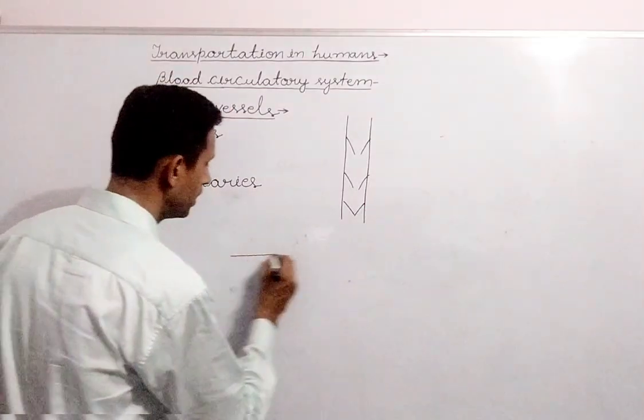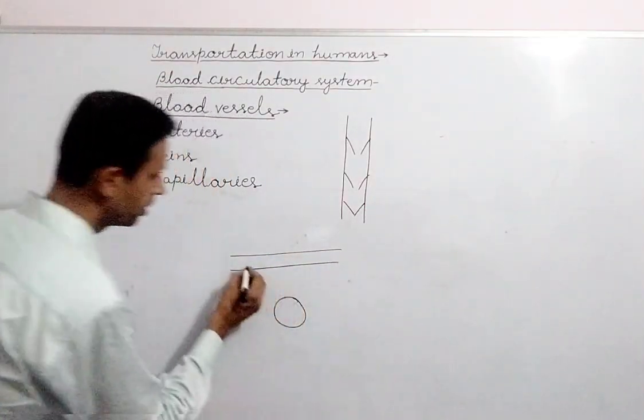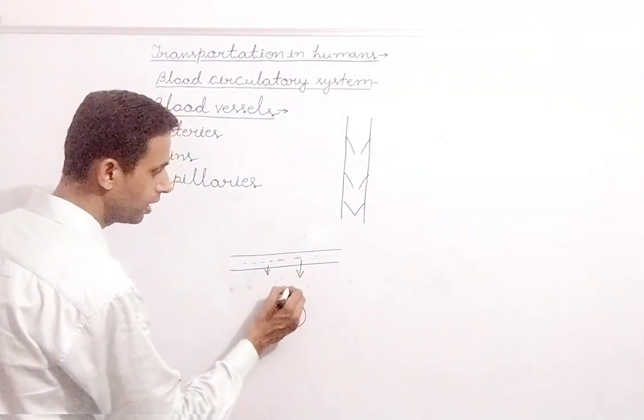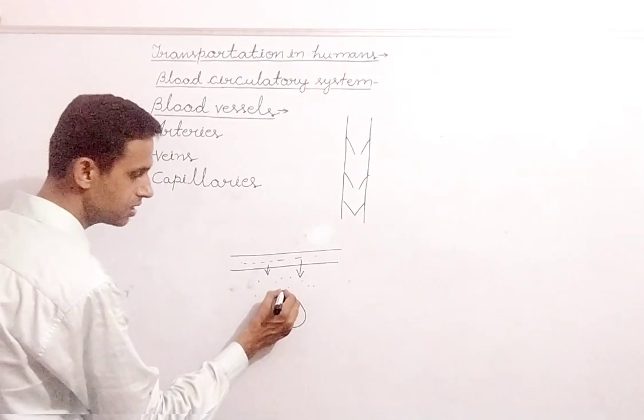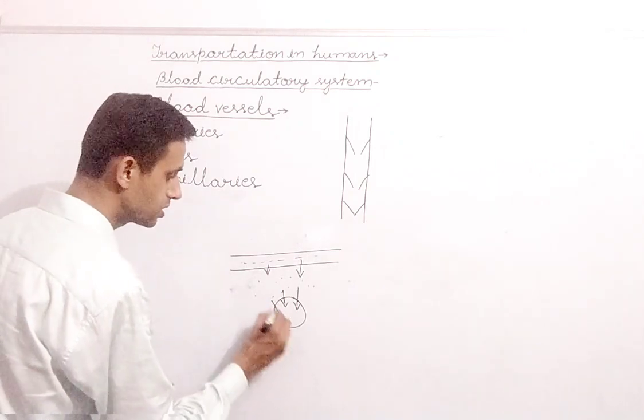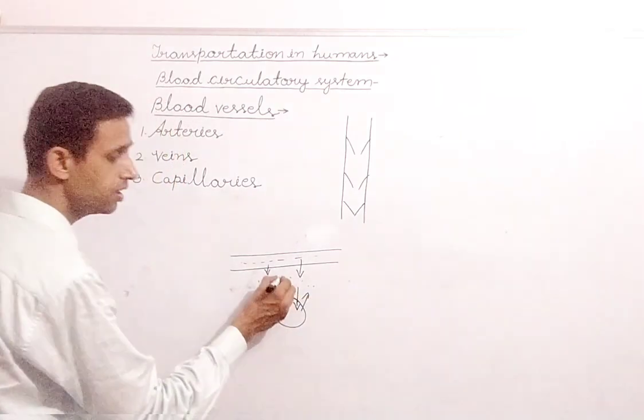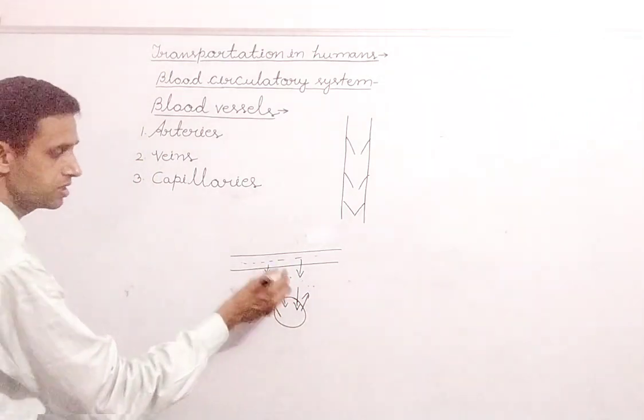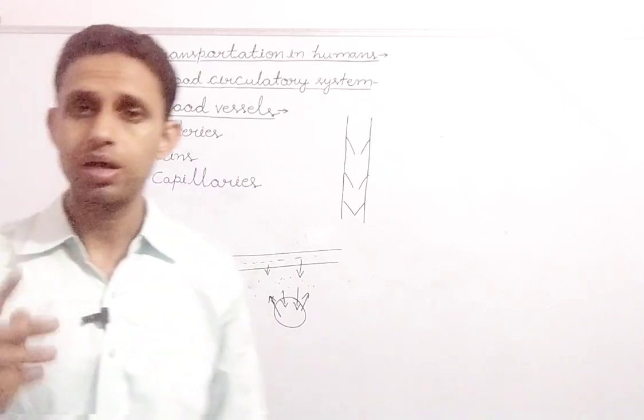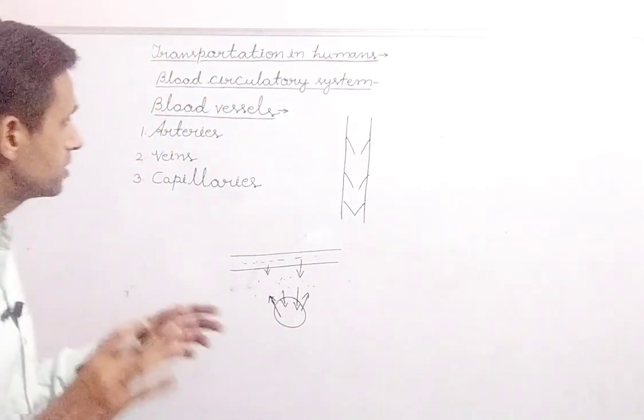Capillaries ke dwara, suppose kariye, jaise maan lo yeh capillary hai, or yaha maan lo koi cell hai ya tissue hai. Toh blood yaha flow kar raha hai, toh squeeze out hoga blood. Jo fluid hai, woh yahan aa jayega. Or yahan se jo oxygen hai, woh cell ke andar, nutrient cell ke andar. Or cell se jo waste hai ya CO2 hai, woh nikal ke interstitial ya intercellular jo spaces ka jo fluid hai, wahan chala jayega. Or ye fluid vaapas se capillaries ke andar chala jayega. Or capillaries vaapas se recombine hongi, venule banayegi, then veins banayegi.